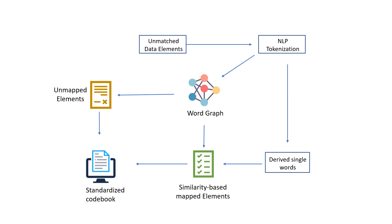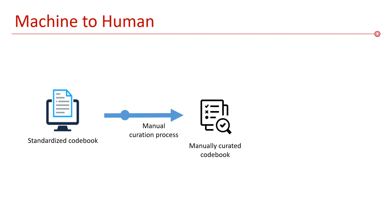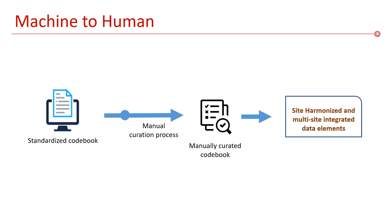These are then added to the standardized data element set. In the machine-to-human process, the standardized code book integrating different sites' data elements and the data dictionary mapping matched variables between sites are optimized through manual curation. This mainly focuses on cases where more than one matching variable is identified, requiring domain expert judgment. Then the final set of harmonized multi-site integrated data elements is produced.